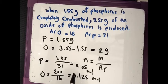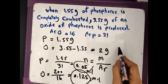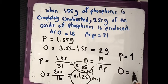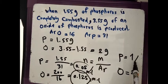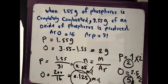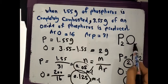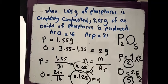Dividing by the smallest number (0.05): phosphorus gives 1, oxygen gives 2.5. Since 2.5 is not a whole number, multiply both by 2: phosphorus becomes 2, oxygen becomes 5. So the mole ratio is P:O = 2:5, and the empirical formula of phosphorus oxide is P₂O₅.